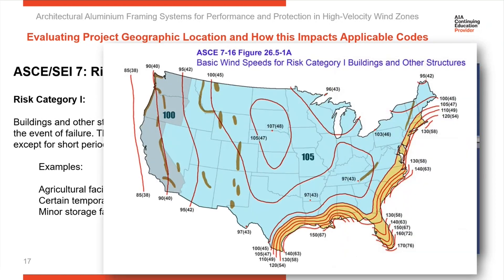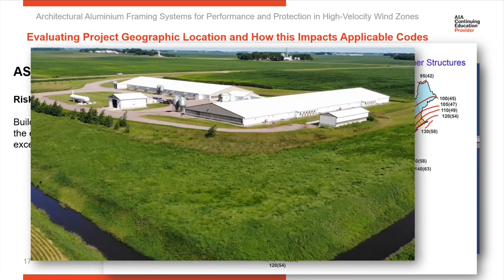Here you can see the wind map associated with Risk Category 1, showing where the 140 mile-per-hour wind zone is — that's way down on the bottom part of Florida. Risk Category 1 structures are not as valuable to the community, so we're not seeing as large an area that incorporates Risk Category 1. Here's an example of an agricultural facility, which would be Risk Category 1. You can see it's by itself; there aren't that many people here, and if this building was damaged and debris was blowing, there aren't other facilities around it that could be impacted.